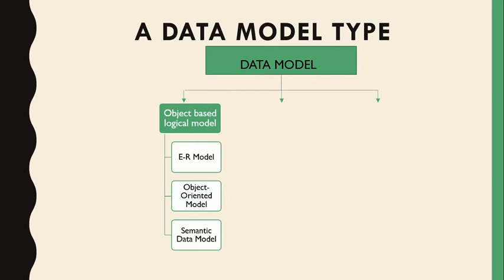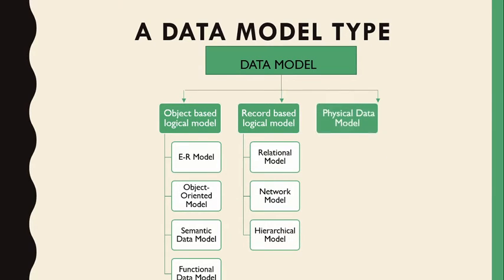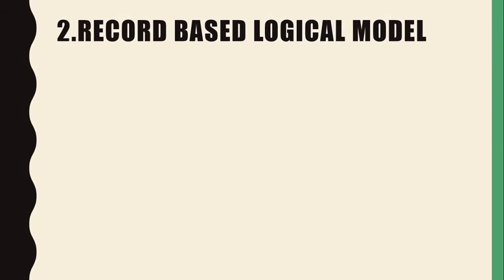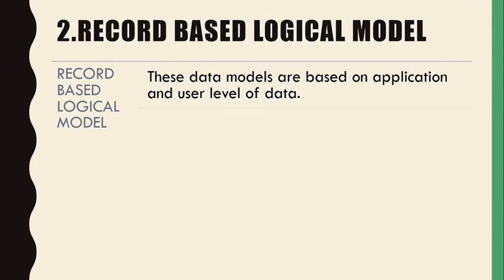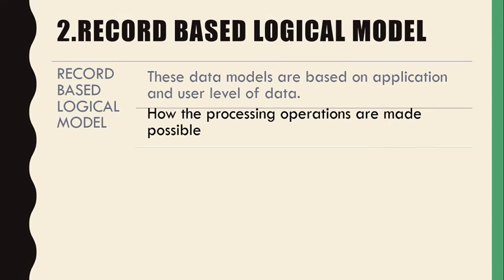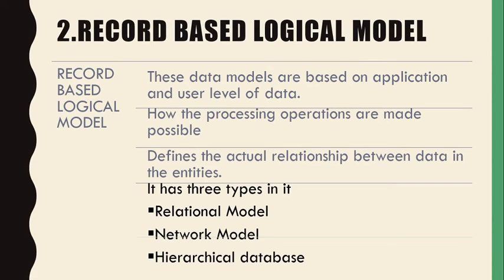In a previous lecture we discussed the object-based logical model and its different types. In this lecture we discuss the record-based logical model, which includes the relational model, network model, and hierarchical model, and lastly the physical model. Record-based logical models are based on application and user levels of data, and how processing operations are made possible. Data dimensions in record-based models define the actual relationships between data and their entities.